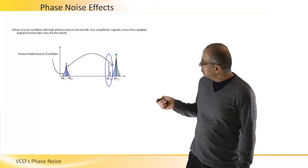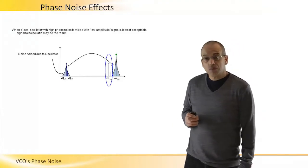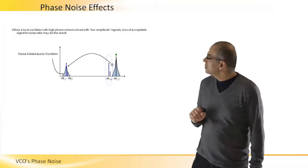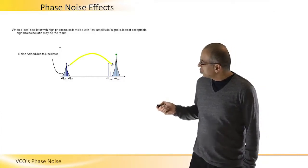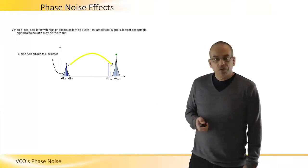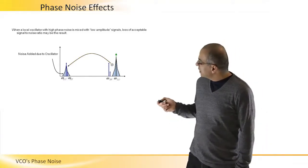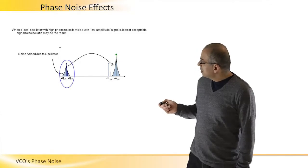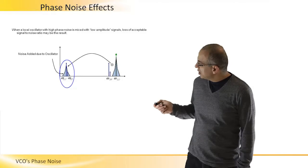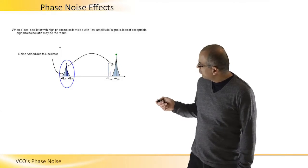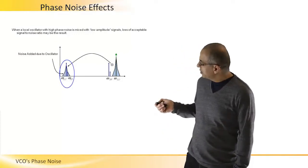and maybe a lower signal here—both are important for us. If we do a down conversion to an IF frequency, we may find that we get the strong signal, but the weaker signal may be buried under the skirt of the original LO signal.